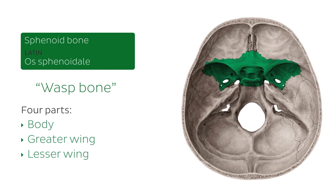We cannot see the pterygoid processes from this view — they can only be seen from an inferior or lateral view of the skull. But it's worth noting that the sphenoid bone is comprised of these four main parts.